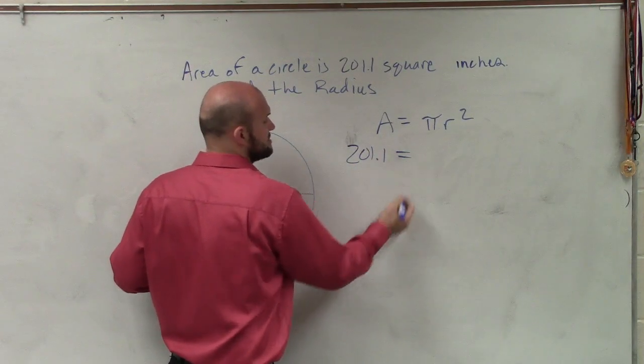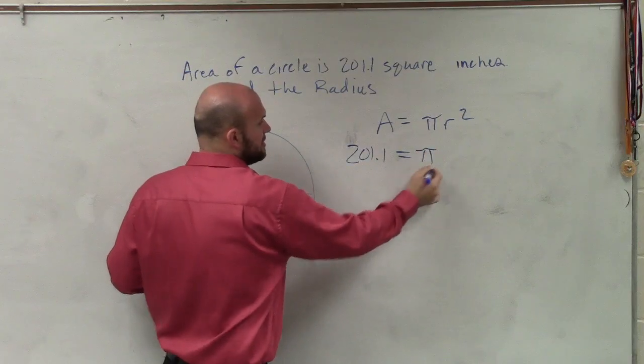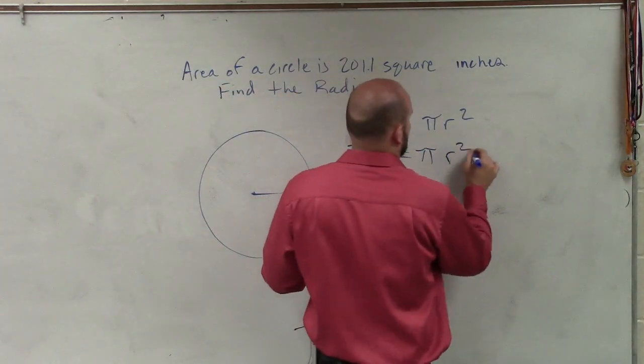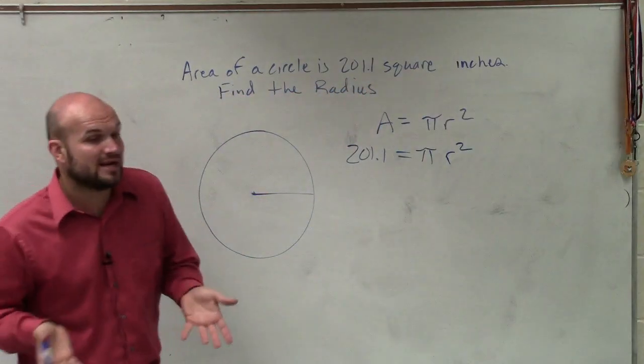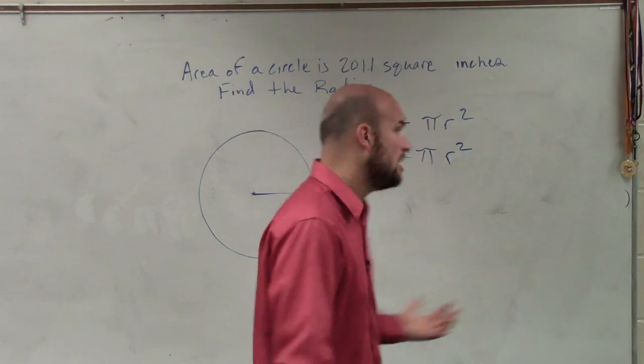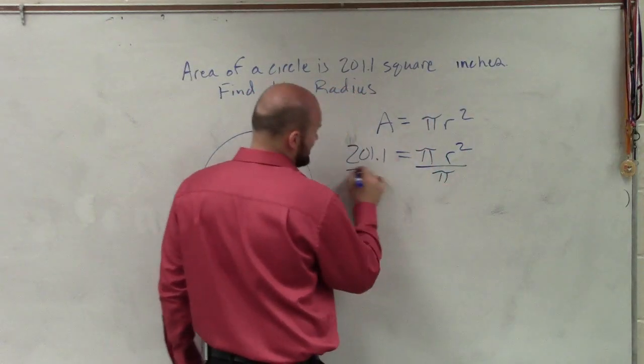201.1 equals pi. We already know pi is a number. And then we do not know the radius. That's what they're asking us to do. R squared. So therefore, to find the radius, what I need to do is use my inverse operations to isolate my r. So to do that, I'll divide by pi on both sides.